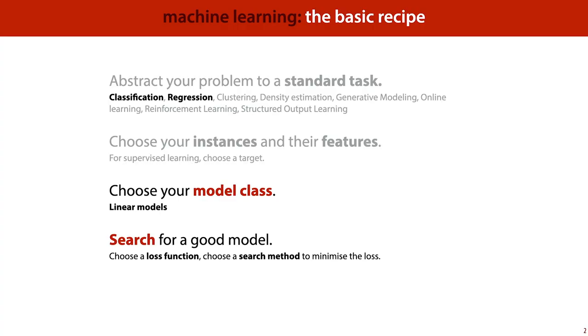In the last lecture, we saw the basic recipe of offline machine learning. We abstract our problem to a standard task by choosing instances and their features. We choose our model class, and we search for a good model within that model class. We'll focus in this lecture on the last two points, specifically on the model class of linear models. And we'll look for a large part of the lecture at the different ways we have in general of searching for a good model within a model class. And a lot of the search methods that we see here today are not just applicable for linear models, but are applicable to a lot of models in general.